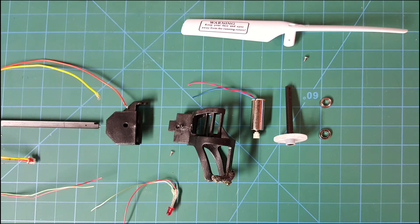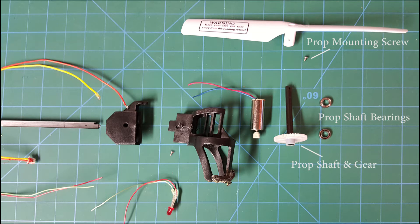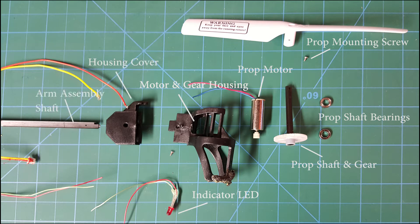Here I've laid out all the components in the arm assembly. We have the propeller, the propeller mounting screw, the propeller shaft bearings, there's two of them an upper and a lower, the prop shaft and gear, the prop motor itself, the motor and gear housing, the indicator LED, the housing cover, the arm assembly shaft, and then the arm assembly shaft screw. So as you can see, there is a lot to the arm assembly. Breaking it down, taking it apart, replacing that motor, doing some soldering. It's just a lot easier and really not that much more money to replace the whole shaft assembly, which was right around $9.